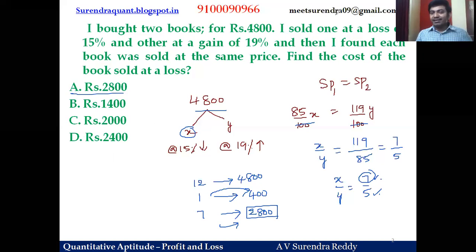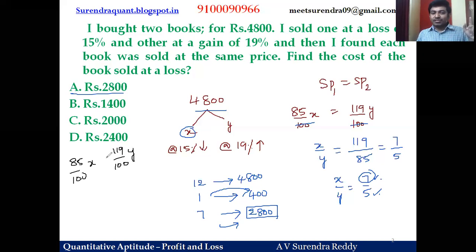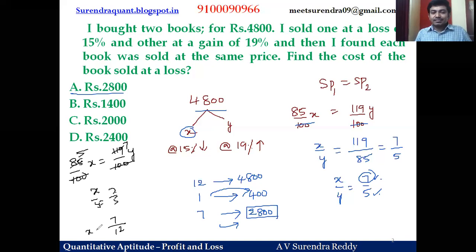In an exam, you should do this quickly in your mind. First book: 15 percent loss means 85 percent selling price. Second: 19 percent gain means 119 percent selling price. Since selling prices are equal, equate and cancel — x to y ratio is 7 to 5. Cost of x is seven-twelfths of 4800, so 12 goes 4 times into 4800 — answer is 2800. You can do it in three steps.